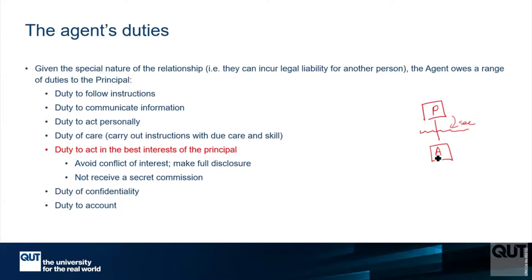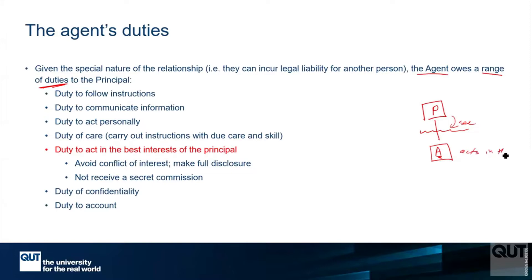This means the agent is in a position to actually take advantage of the principal. For instance, if you're at the coffee shop, you could take some of the money for yourself or give a coffee to a friend. To overcome this problem, the law recognises that the agent has a range of duties they owe to the principal — most of these are to ensure that the agent acts in the principal's interests.